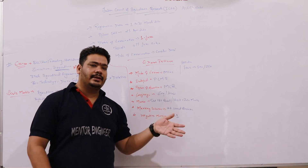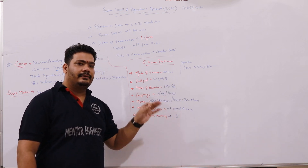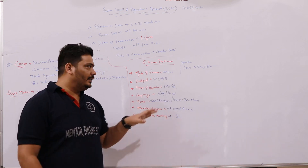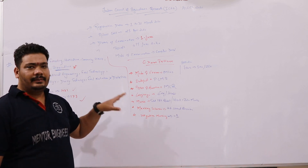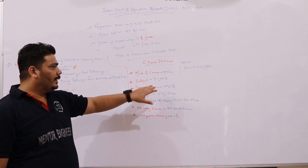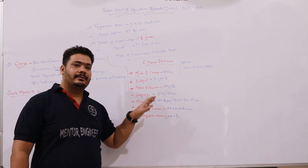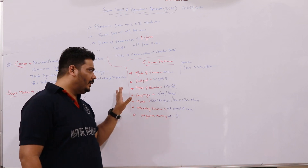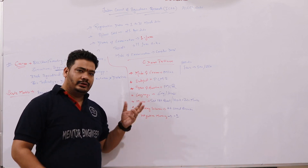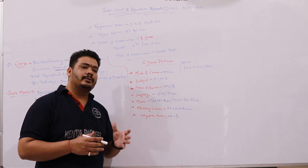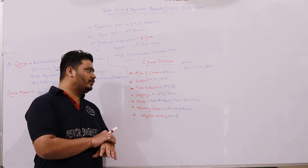The application fees are around 500-700 rupees for the general category, with reduced fees for other categories. The question paper consists of multiple choice questions and is available in both Hindi and English languages.